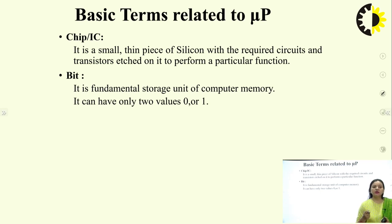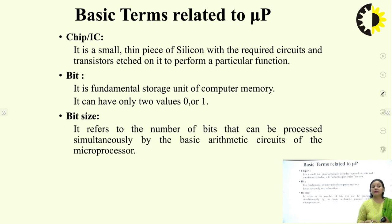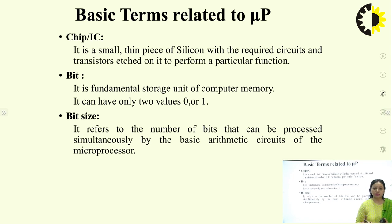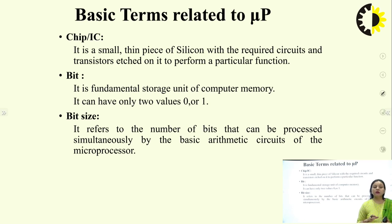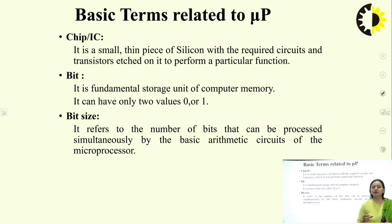A bit is the fundamental storage unit of computer memory; it can have only two values: 0 or 1. Bit size refers to the number of bits that can be processed simultaneously by the basic arithmetic circuits of the processor. If 8085 is an 8-bit processor, it can read or write 8-bit data at any time, perform arithmetic and logic operations on 8-bit data, and give results in 8-bit registers.